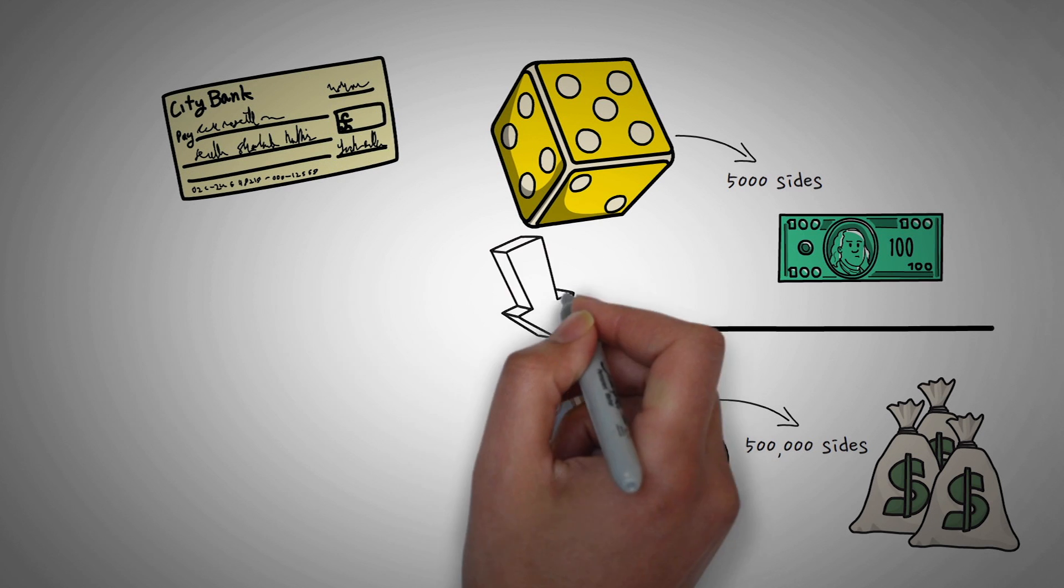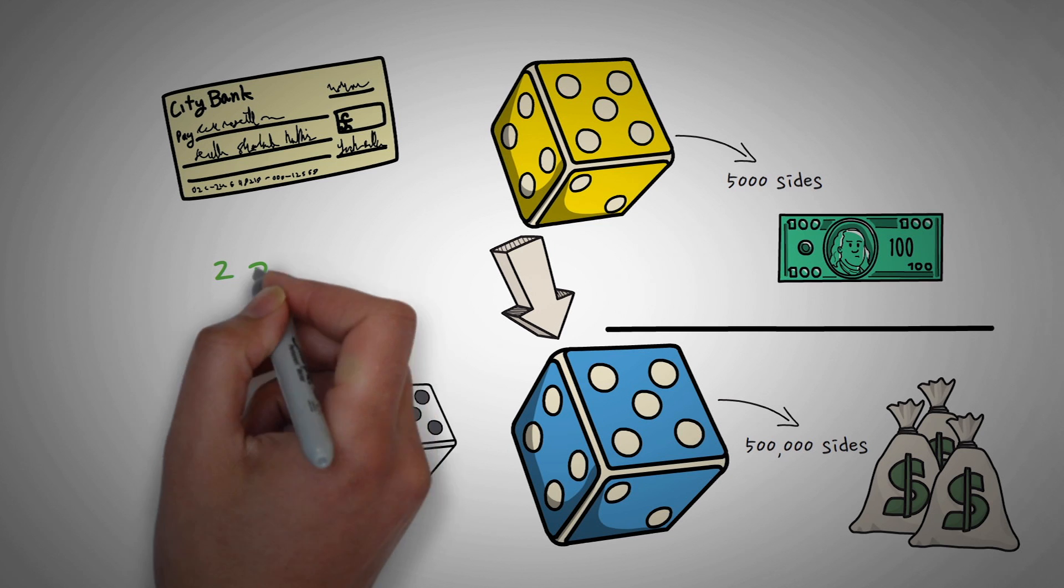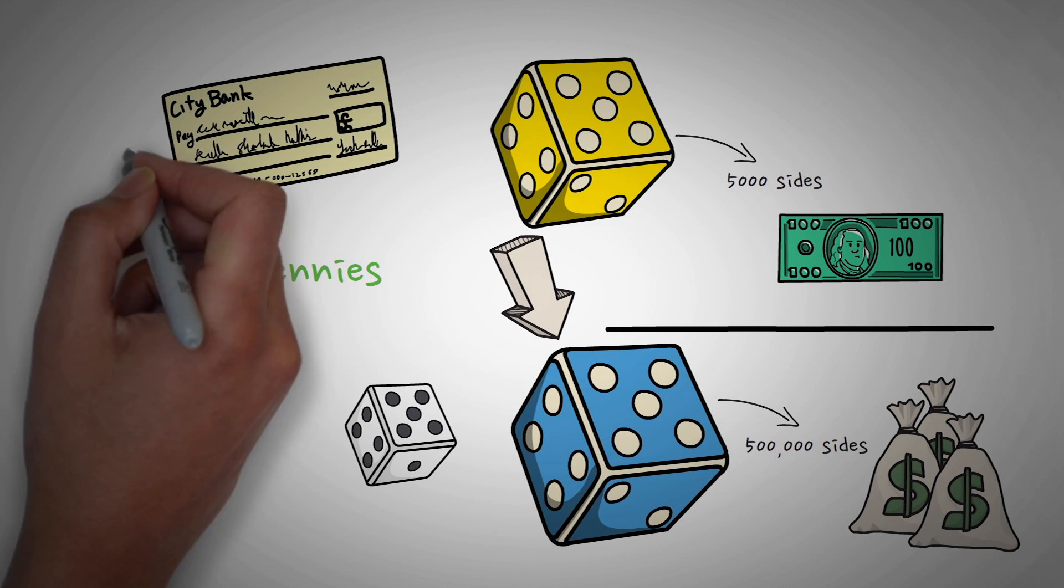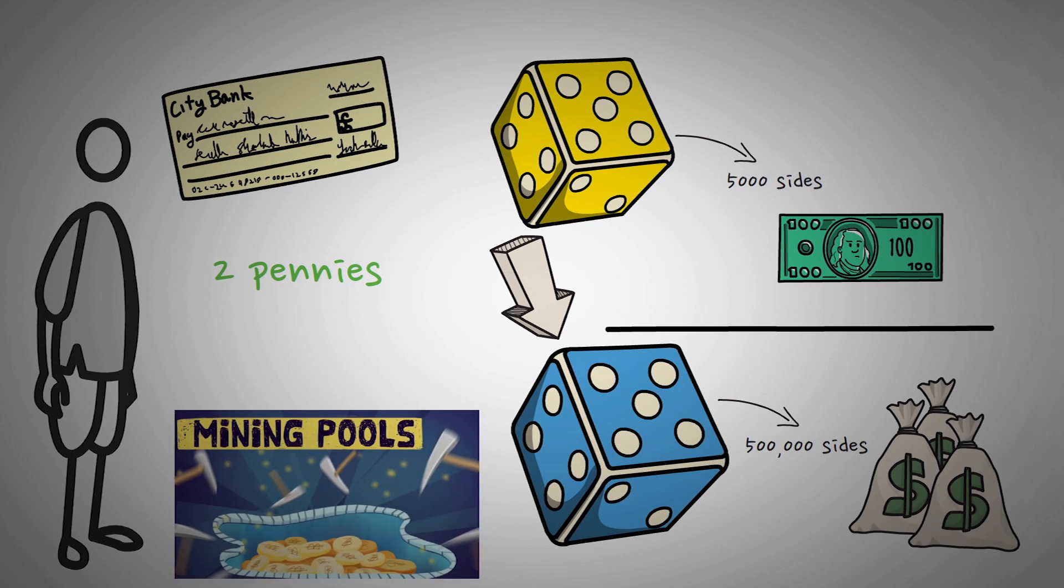Would you rather roll this dice, or the regular dice that only had 50 sides? So even though on average they pay you the same amount, which is two pennies a roll, you want the smaller one, because you would get paid more often. Well, this is exactly what a mining pool is.